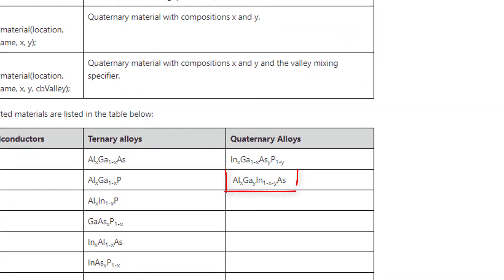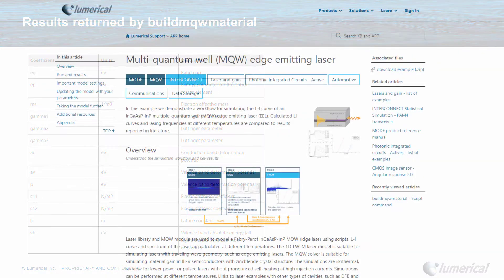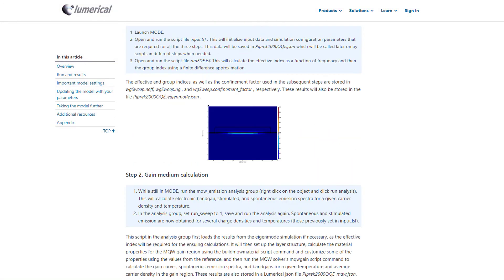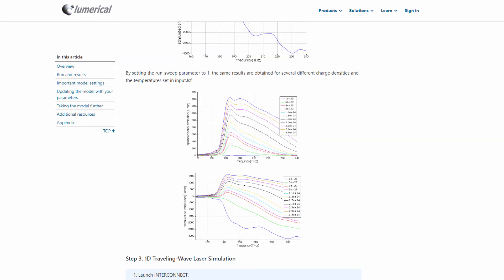This is now added to the list of supported materials in the build MQW material command. Similar to what's been available for other materials, this enables users to obtain parameters such as bandgap and lattice constant. These are later used to get results like index, gain, spontaneous and stimulated emission.